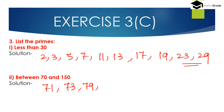The prime numbers between 70 and 150 continuing: 71, 73, 79, then 83 is a prime number. 84 is not a prime number. 85, 86, 87, 88 — none of these are prime. 89 is a prime number. Then checking 91, 92, 93, 94, 95, 96 — not prime. 97 is a prime number.